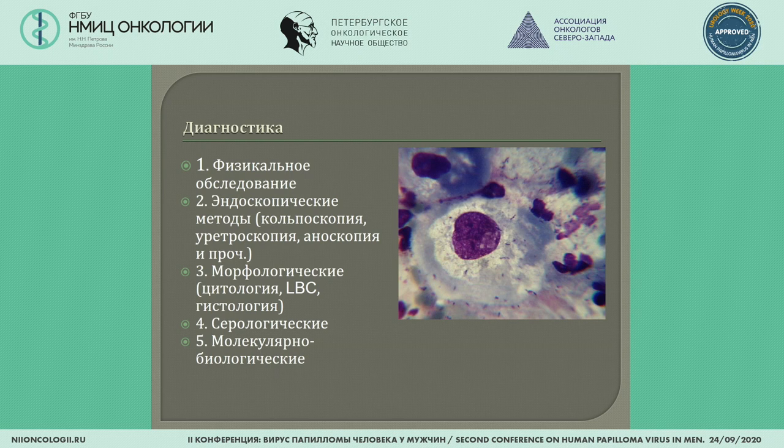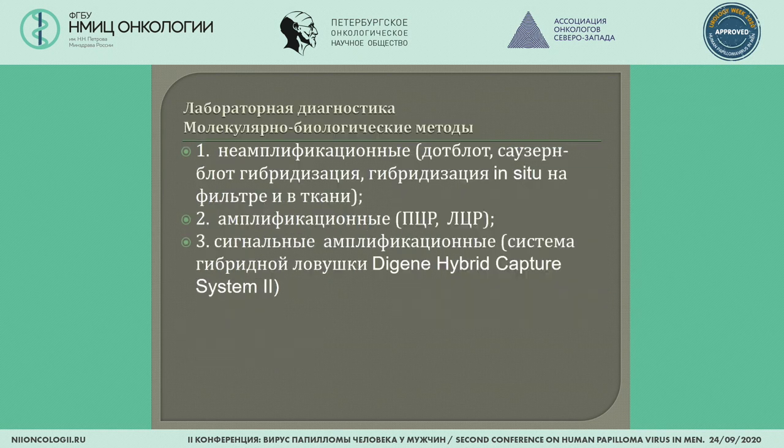We should remember that antibodies to HPV can be found only in 10–15% of infected individuals on protein B7, which is difficult for clinical laboratories. Our routine practice is molecular biological methods. There are three groups: non-amplification methods being one.